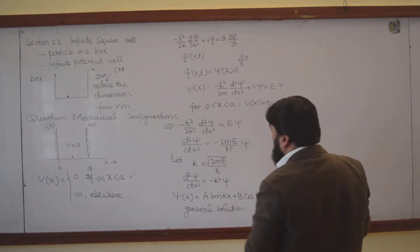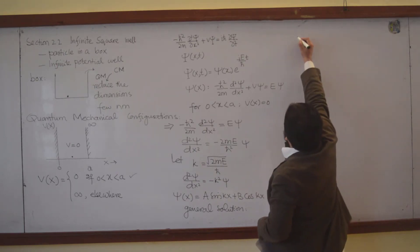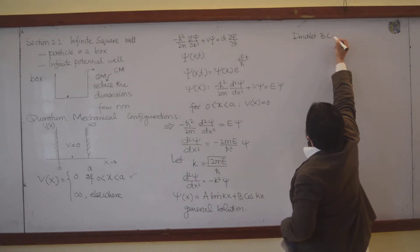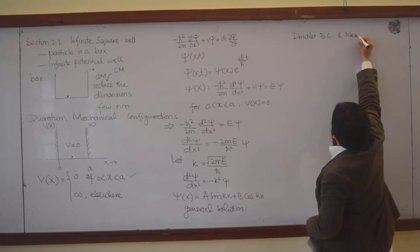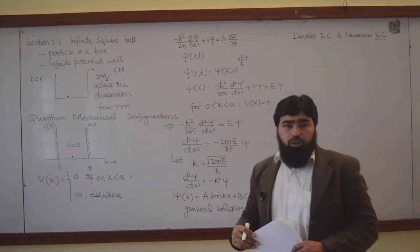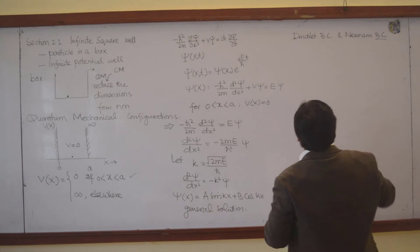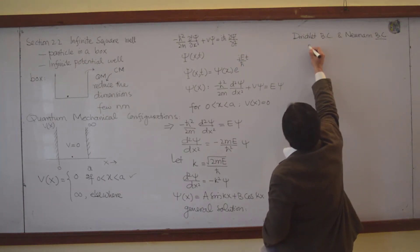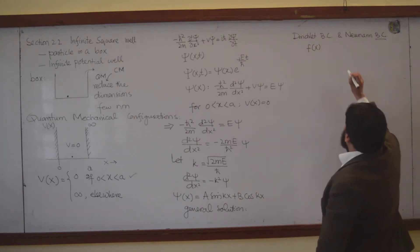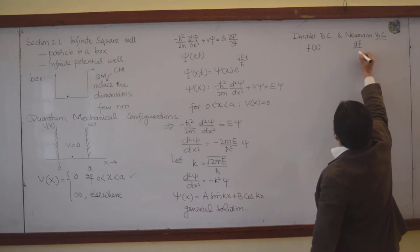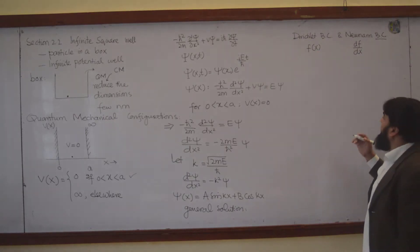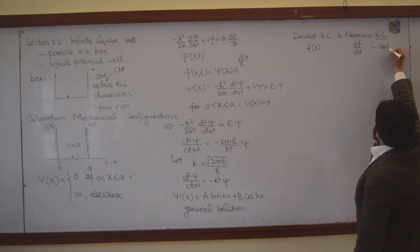There are two boundary conditions. One is called the Dirichlet boundary condition and the other is called the Neumann boundary condition. In the Dirichlet boundary condition, the function remains continuous on a boundary, and in the Neumann boundary condition, the derivative of the function with respect to its variable remains continuous. So these are the continuity conditions.